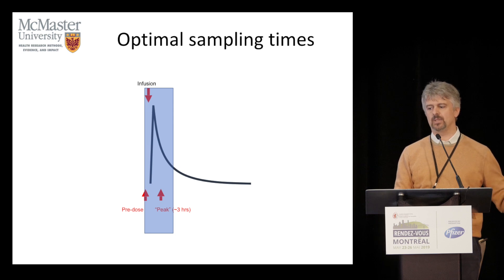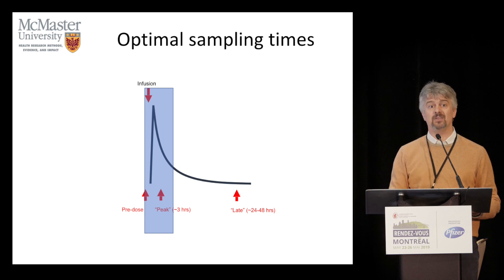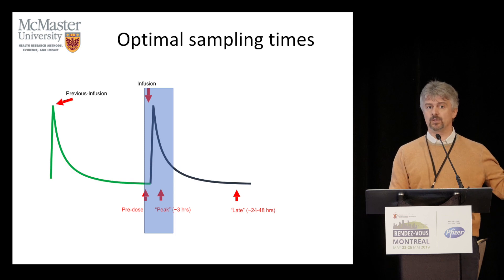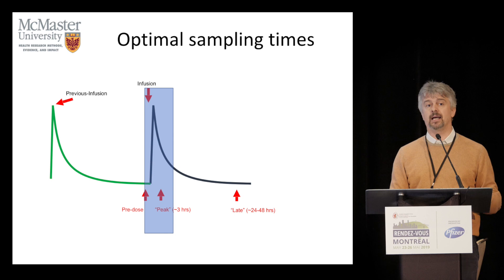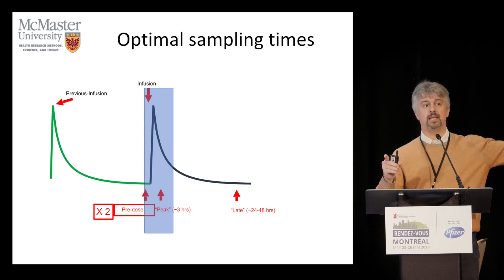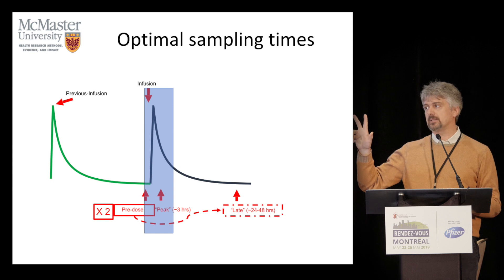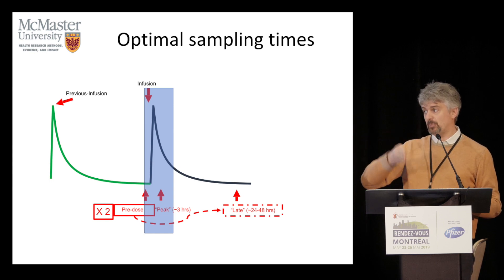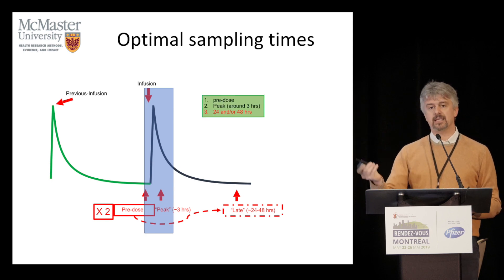Now, if they can come back, we draw a sample the day after or two days after. If they cannot come back, PopPK can help: you ask when they last infused, get information about a previous infusion, and calculate how many hours after that infusion you are. With PopPK, the pre-dose is also a late point from the previous infusion, so in three hours you do a study that involves pre, peak, and late — and you lump it all together to get a curve.